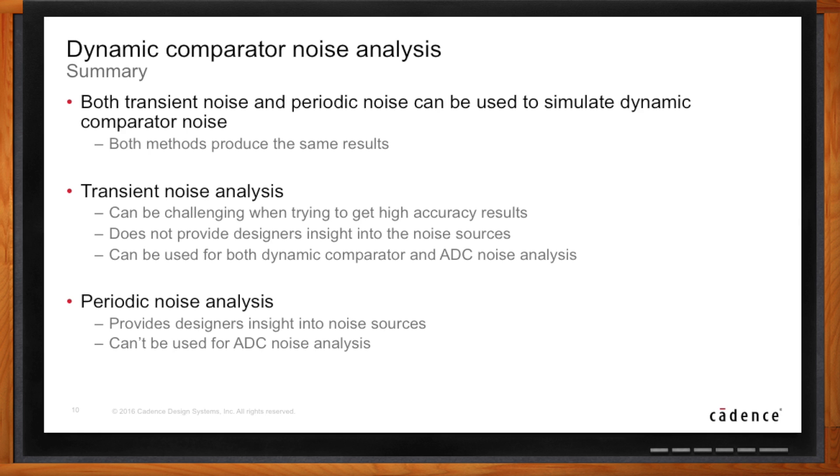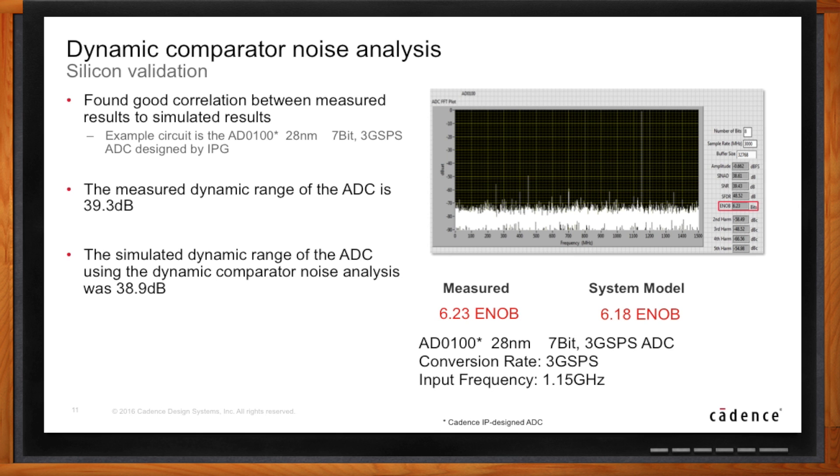Do you have any real data to throw my way, Art? Or are these just PowerPoint results? Of course it's just PowerPoint. Nah. Let's take a look at some actual measured results. This is for an ADC where we've actually applied the full methodology. We've only been talking about the dynamic comparator here, but we take the dynamic comparator numbers and we put it into our overall calculation for the ADC and we compare the results with measured results. We see for measured, we're getting 6.23 effective number of bits. And using our model, we're getting 6.18 effective number of bits. This is actually for a pretty aggressive design. It's a 7-bit, 3 gigasample per second ADC. So it's actually testing the methodology pretty well.